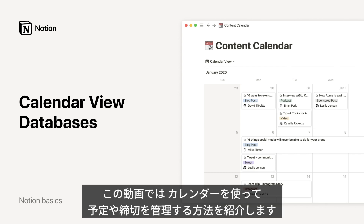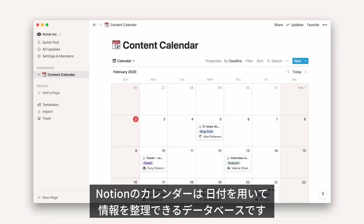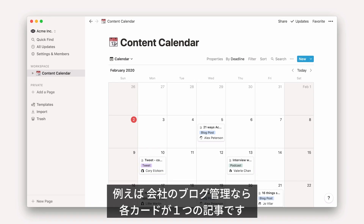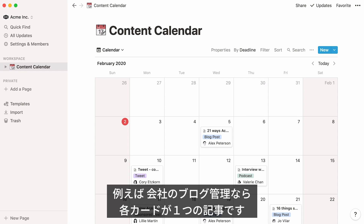Hello! This video will teach you the many ways you can use calendars in Notion to keep track of events, deadlines, schedules, and more. In Notion, calendars are databases that allow you to organize information by date. As an example, here's a content calendar for a company's blog.